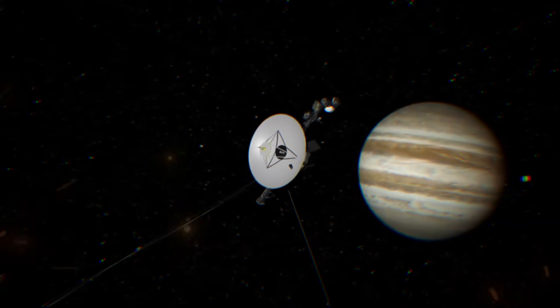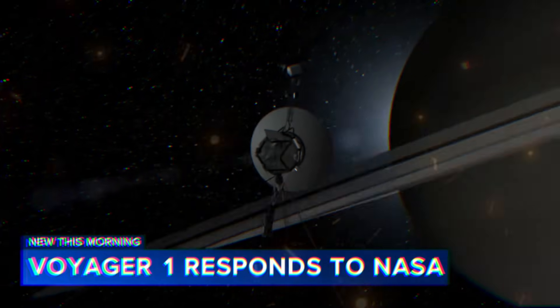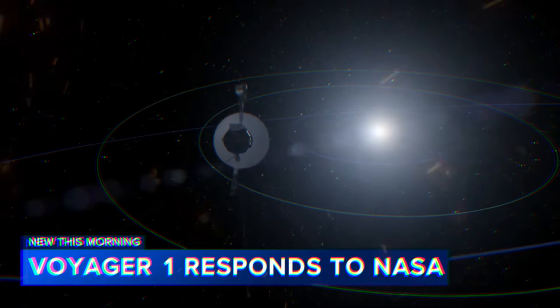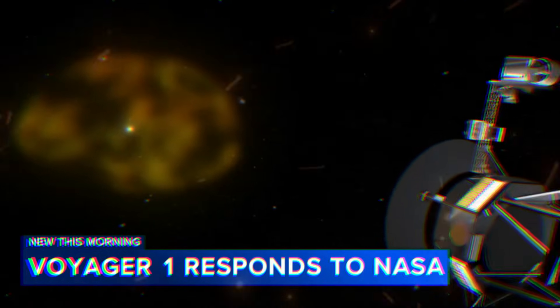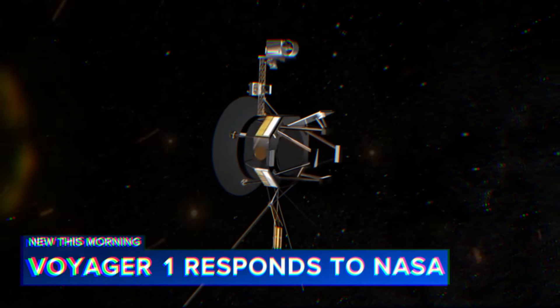New this morning, a surprise for NASA. The Voyager 1 spacecraft is sending back updates on its science and engineering data after spending five months in silence. A broken chip cut off contact with Voyager in March. NASA just sent a code to another part of the spacecraft and Voyager responded.